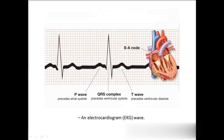This is the ECG. We have three waves: this wave we call the P wave, this wave we call the QRS complex, and this wave we call the T wave.